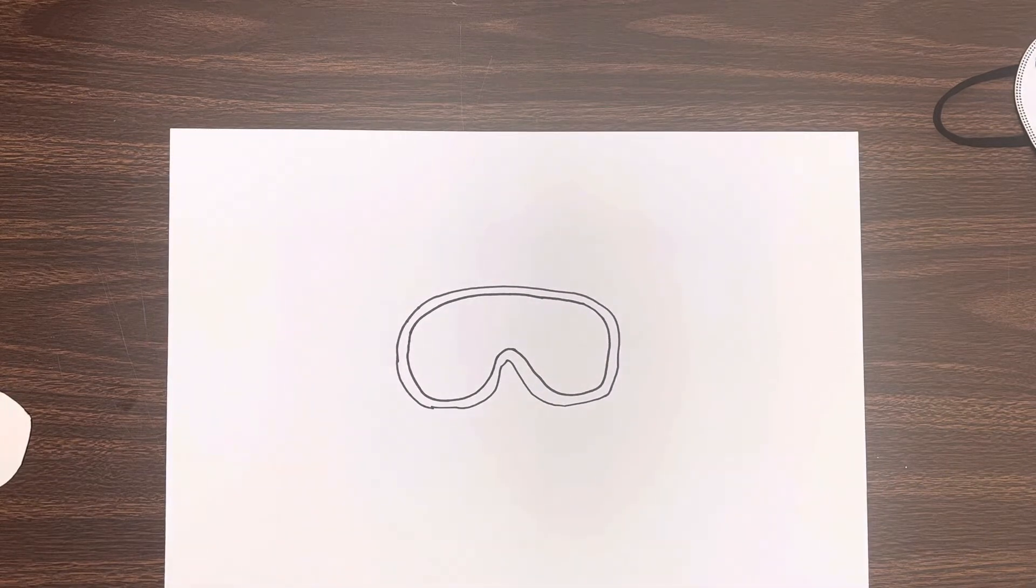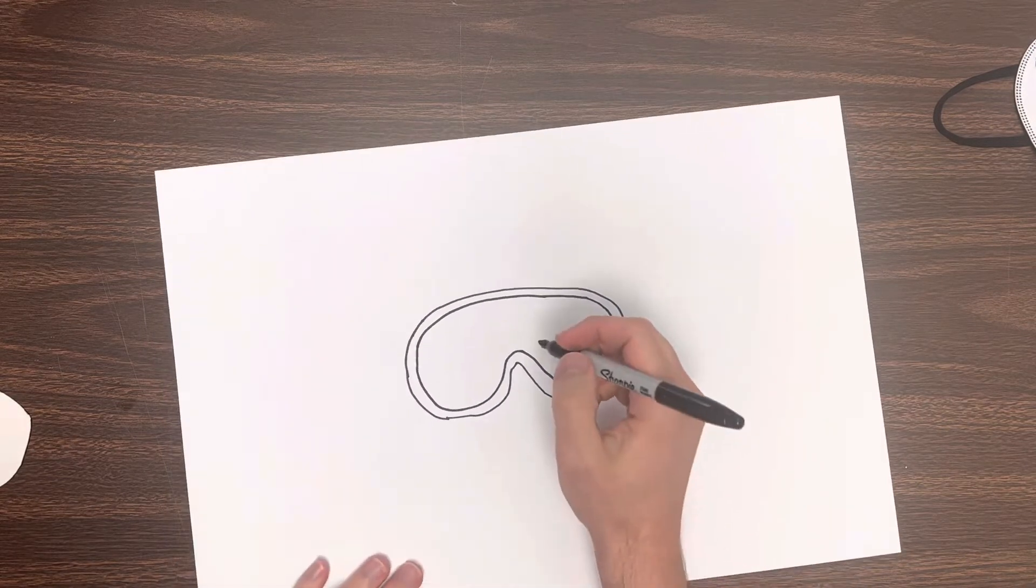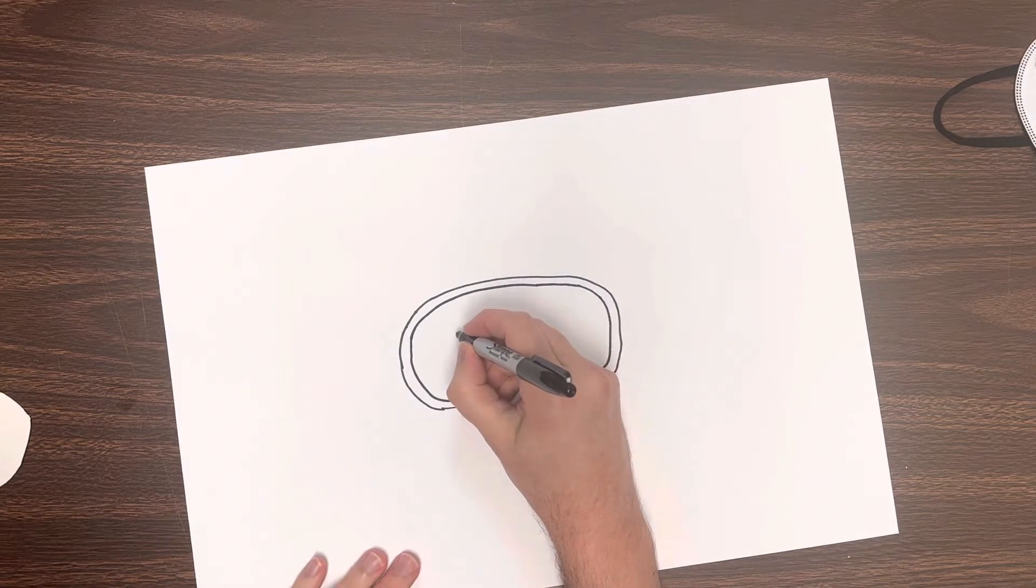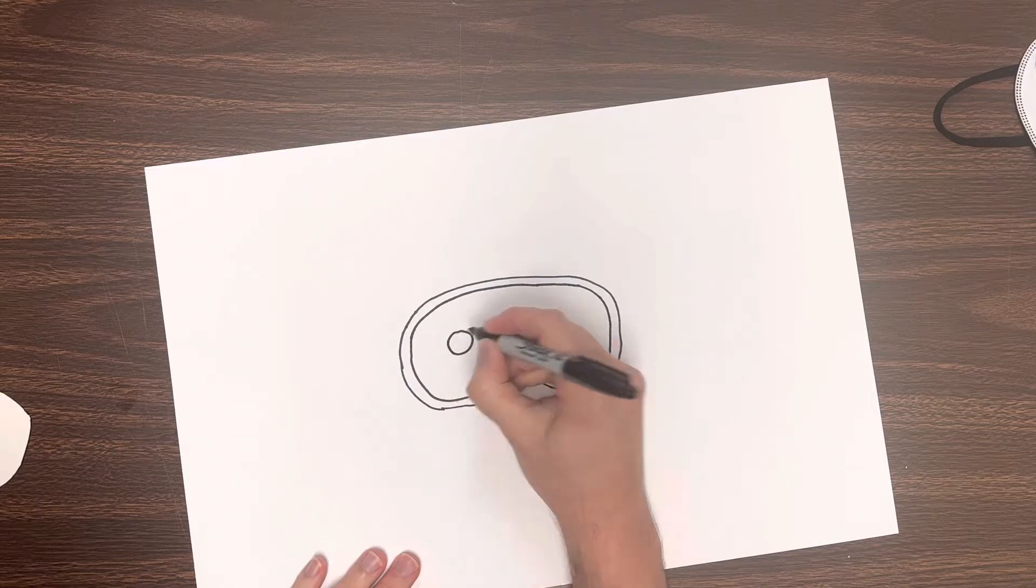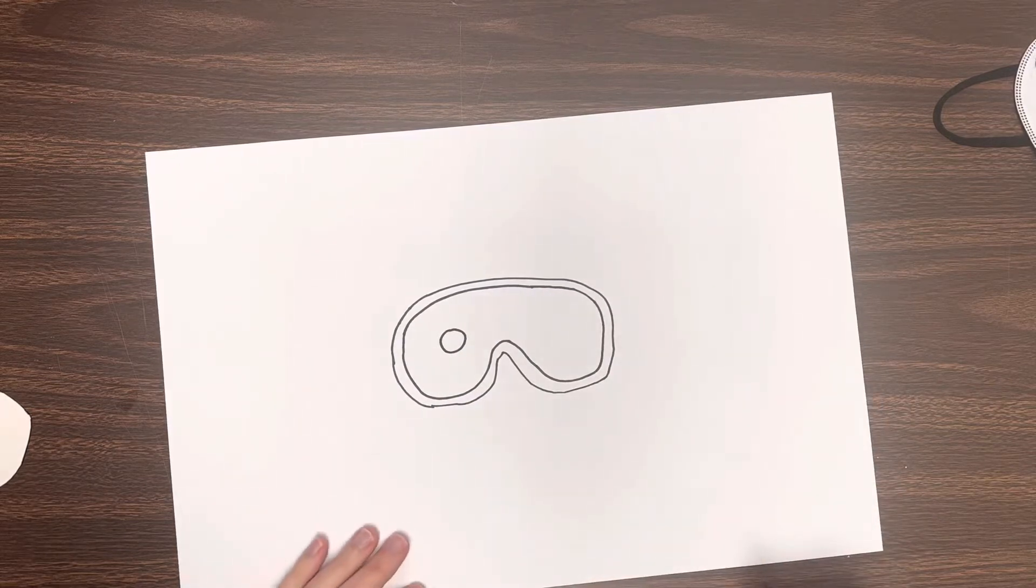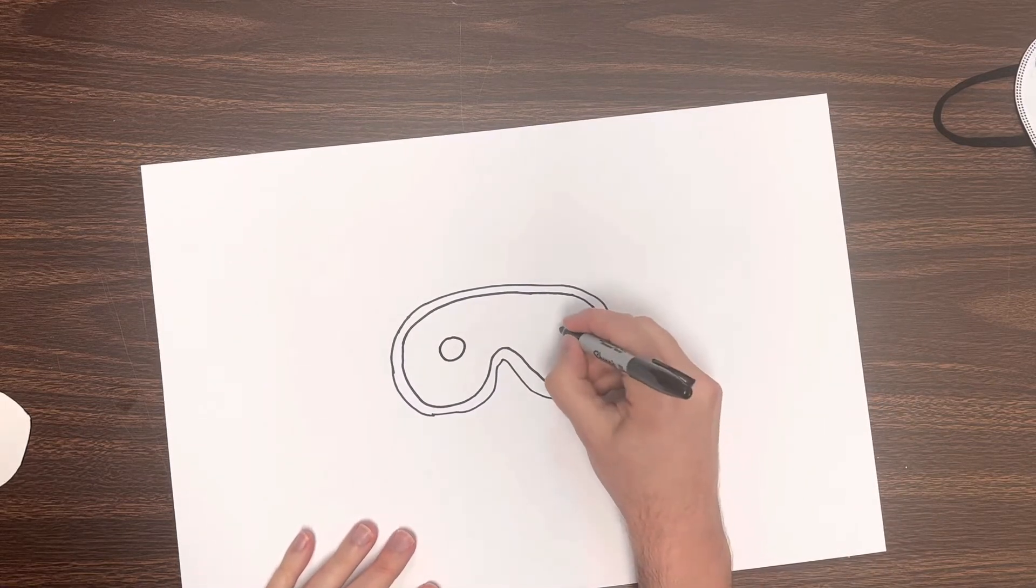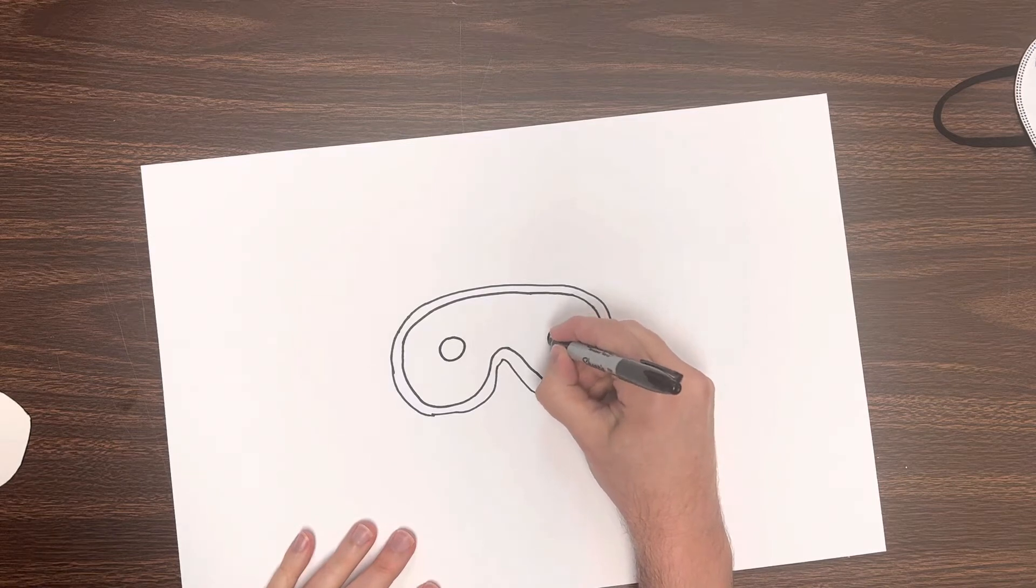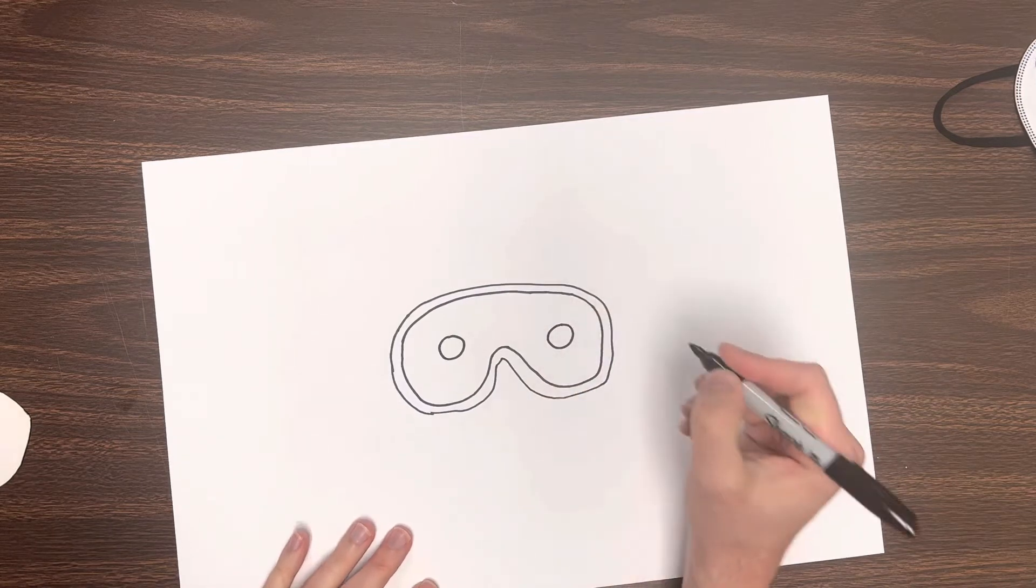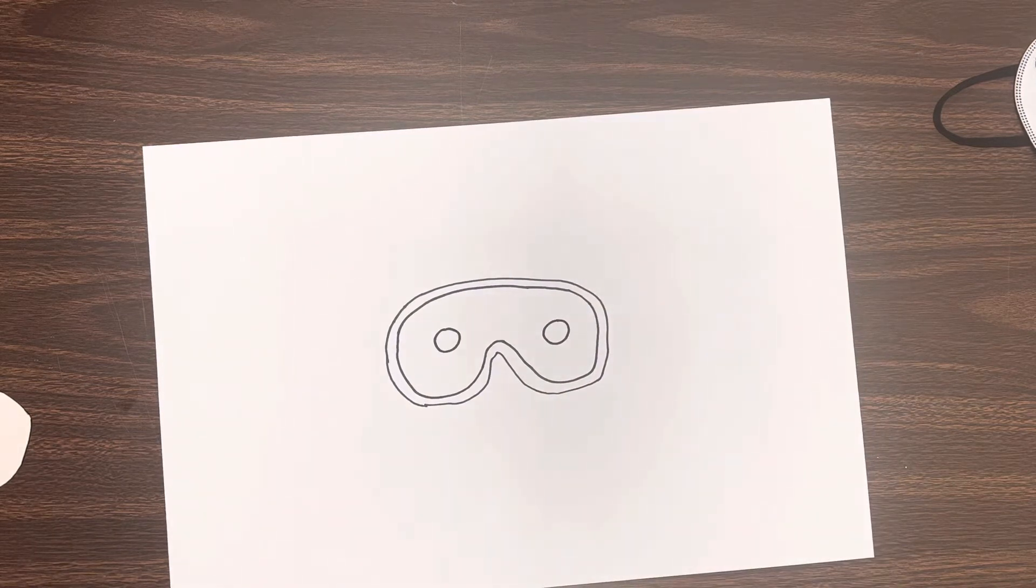Now to draw the eyes, we're going to start with a circle. You're going to do that right inside the goggle, just a nice perfect circle, just like that. And I'm going to do that on the other side as well. So you should be drawing all of these things right along with me.